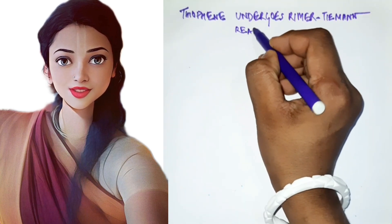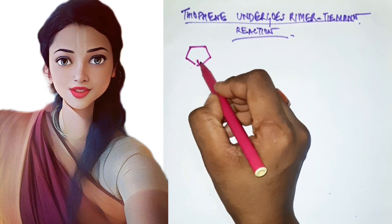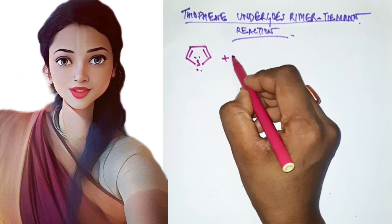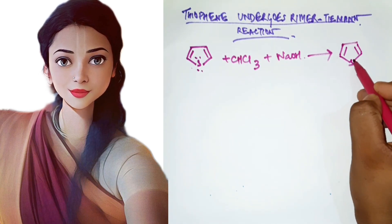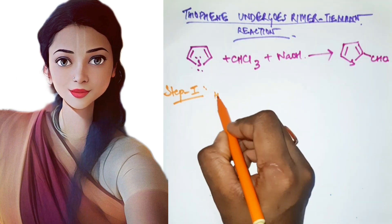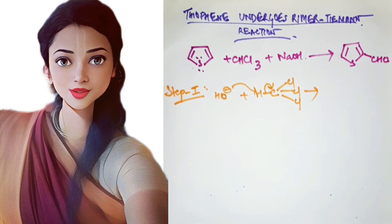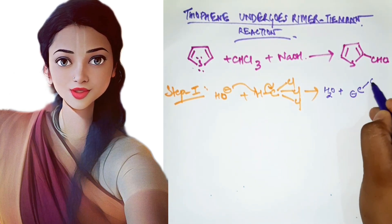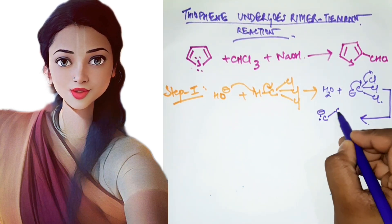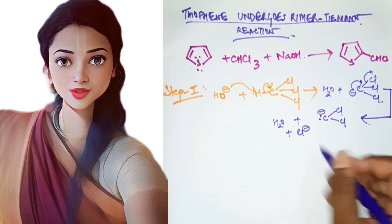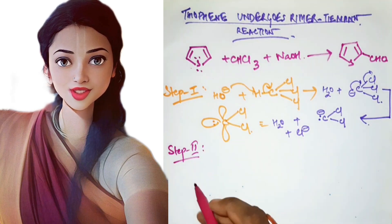When we understand the reaction mechanism, we can easily predict the product of any reaction. The Reimer-Tiemann reaction means the addition of an aldehyde group onto the ring. In the case of thiophene, step one is always the same: the dichlorocarbene intermediate is formed by the removal of a water molecule and a chlorine minus, giving a two-electron system. Dichlorocarbene is very reactive.